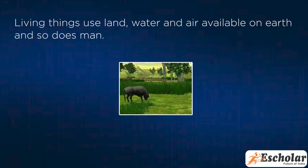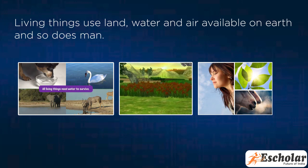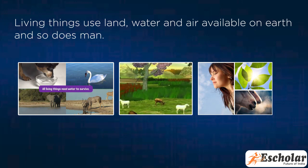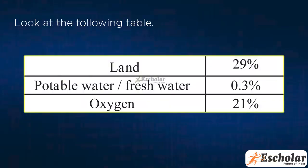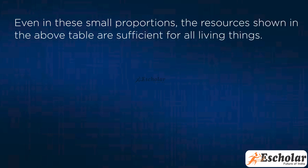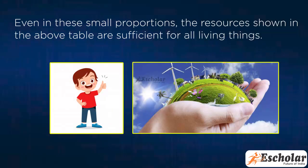Living things use land, water and air available on earth, and so does man. However, the portions of these resources that are actually put to use are very small as compared to the whole earth. Look at the following table: Land 29%, potable water or fresh water 0.3%, oxygen 21%. Even in these small proportions, the resources shown in the above table are sufficient for all living things.